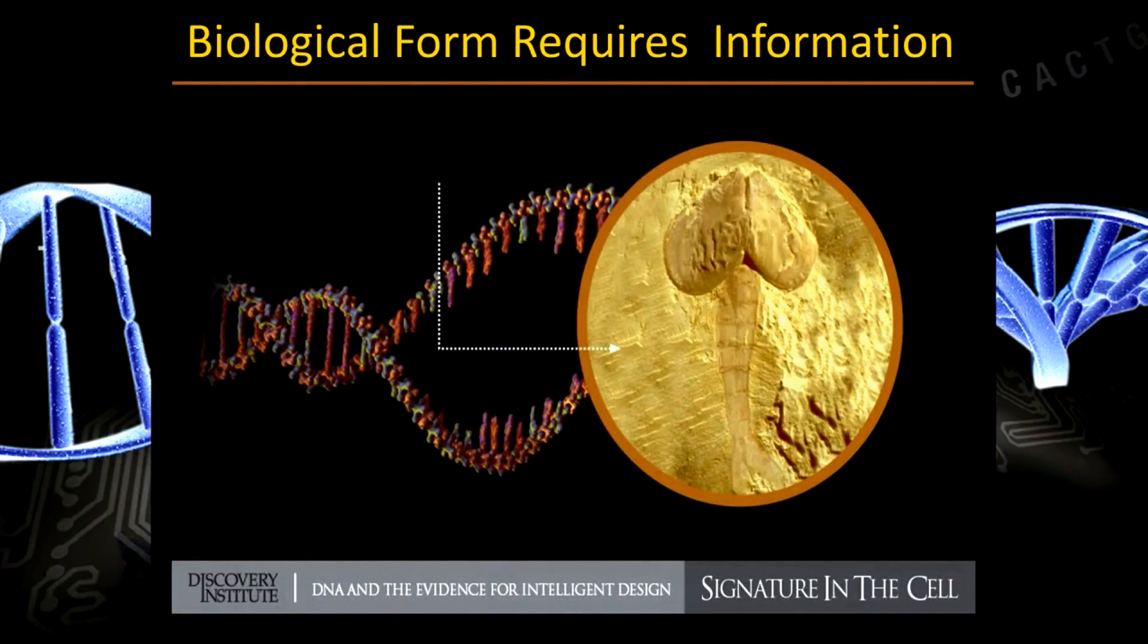And origin of life researchers are in particular acutely aware of this problem. Since 1953 when Watson and Crick elucidated the structure of DNA and also showed in subsequent years that DNA functions like a digital code, in a section of software, or even a section of alphabetic text. Once they established that, then that raised the question, how did that feature of life arise? If you're going to explain the origin of life, you've got to explain its salient features. Its salient feature is arguably the presence of digital information in DNA.